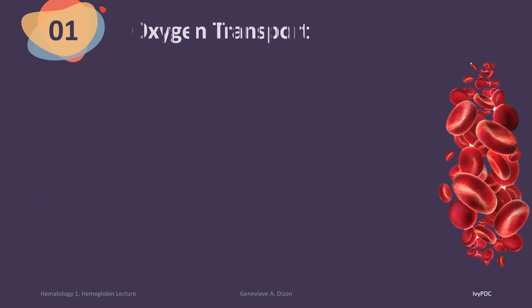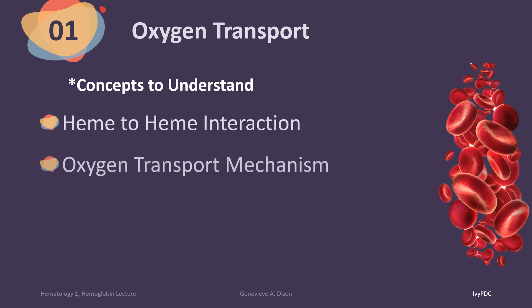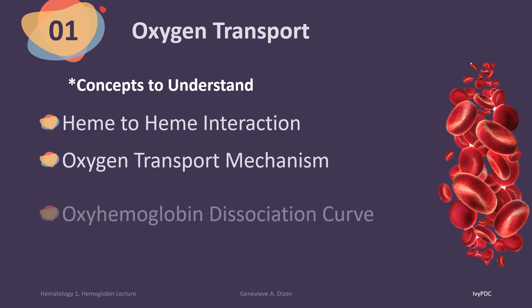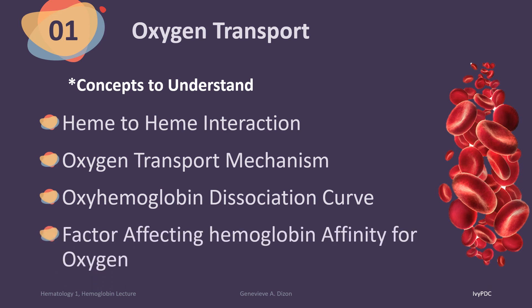To understand how hemoglobin is able to transport oxygen, there are four concepts we need to understand: the first is the interaction between the different heme subunits; the second is the different transport mechanisms for oxygen; the third is the oxyhemoglobin dissociation curve; and lastly, the different factors that affect the affinity of hemoglobin with oxygen.